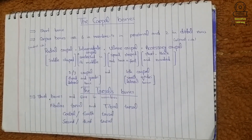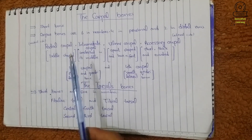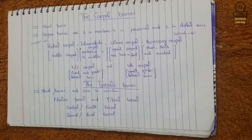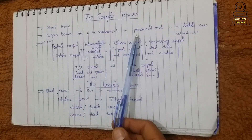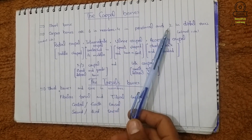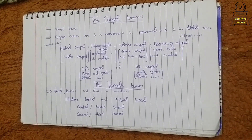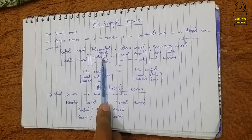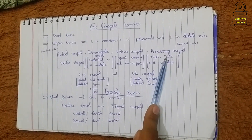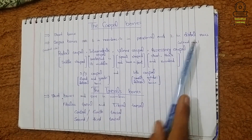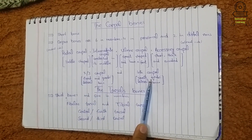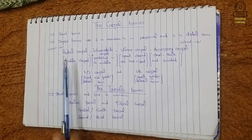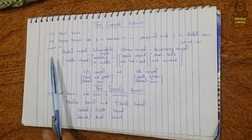Out of these six carpal bones, they are arranged such that four are in the proximal row and two are in the distal row. In the proximal row: radial carpal, intermediate carpal, ulnar carpal, and accessory carpal. In the distal row: second and third carpal, and fourth carpal.